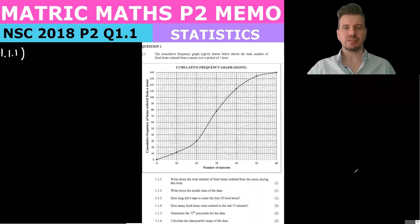Hello Matrix and welcome again. Today I'm going to be doing the memo for the 2018 past paper, the NSC paper, and we'll be starting now with question one, 1.1. The cumulative frequency graph drawn below shows the number of food items from a menu over one hour.